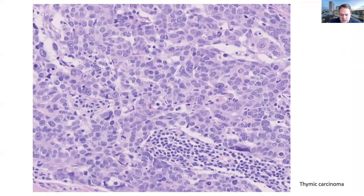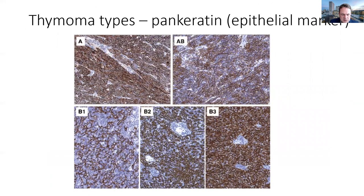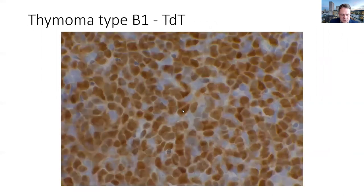Sometimes it's difficult to distinguish the different B-type thymomas, so we may need additional immunohistochemical stains such as pan-keratin, an epithelial marker, to delineate all of the epithelial cells underlying the lymphocytes. Using pan-keratin staining, you can see the typical pattern of type A, AB, B1, B2, and B3. It may also be necessary to determine whether we're dealing with normal thymocytes — lymphocytes that express TdT, which normally happens in the thymus.